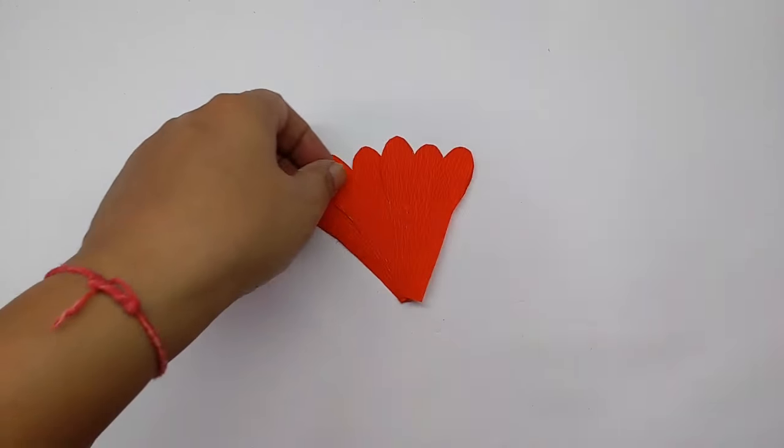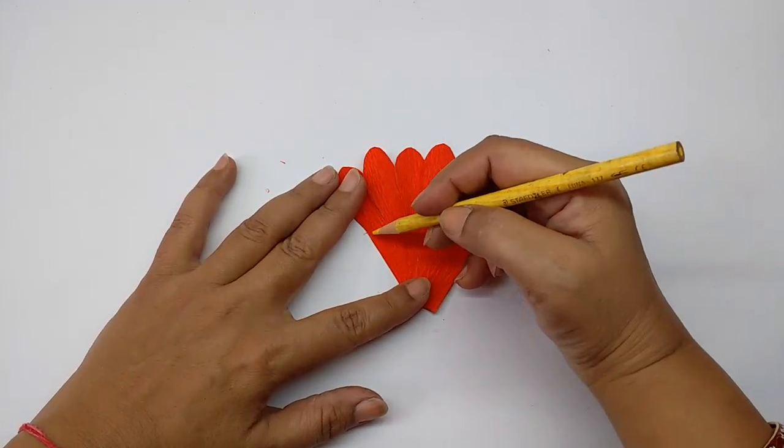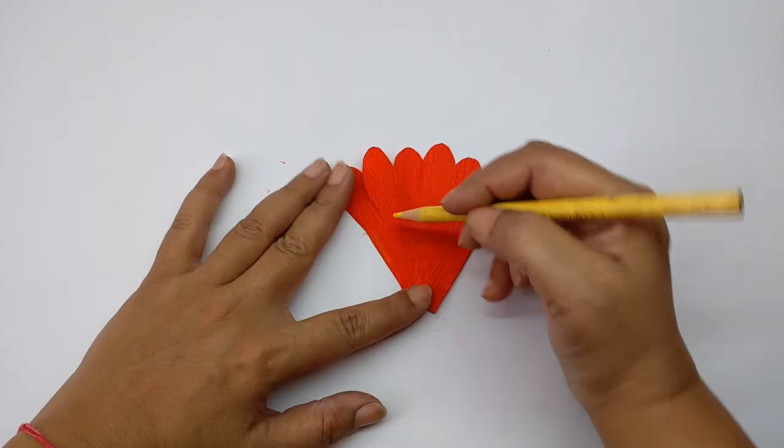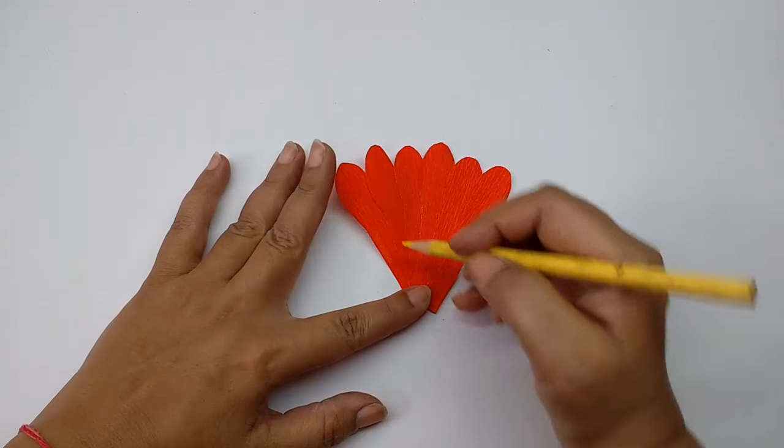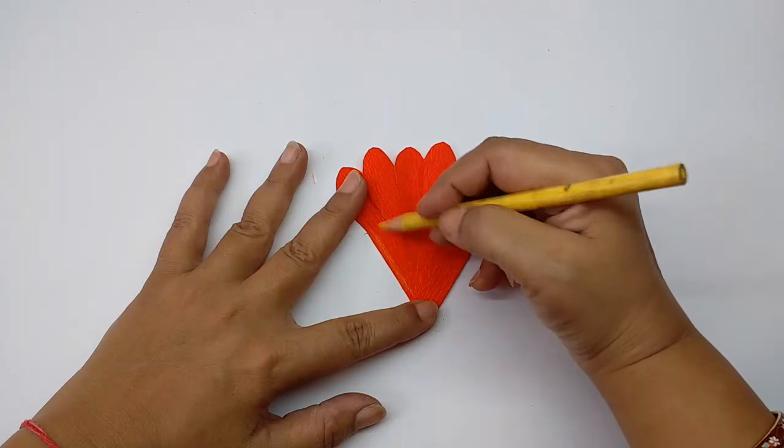Now take the yellow pencil and color all the petals on the stem, below this curvature line till almost the bottom. Just color them yellow.